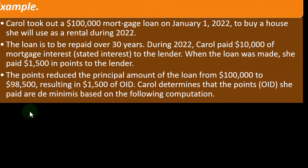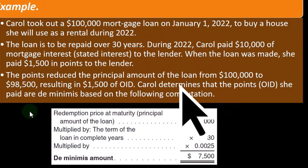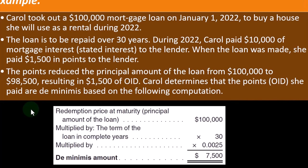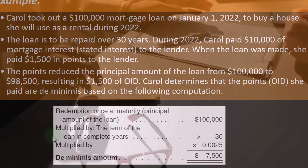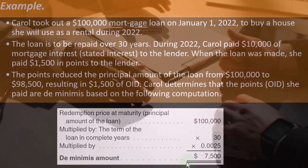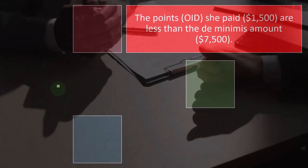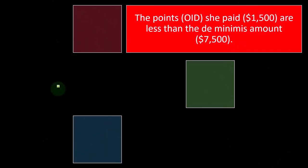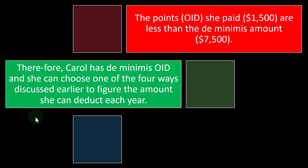Carol determined that the points OID she paid are de minimis based on the following computation. The redemption price at maturity (principal amount) of $100,000 multiplied by the term of the loan in complete years — 30 — multiplied by 0.0025 gives a de minimis threshold of $7,500. The points OID she paid, $1,500, are less than the threshold of $7,500. Therefore, Carol has de minimis OID and can choose one of the four methods discussed earlier to figure the amount she can deduct each year.